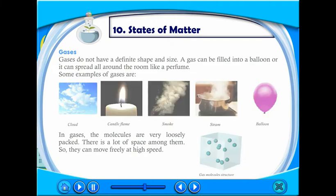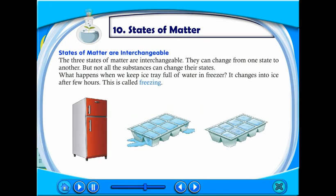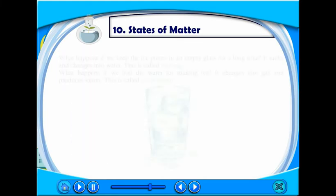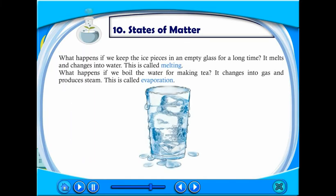States of matter are interchangeable. The three states of matter are interchangeable. They can change from one state to another, but not all substances can change their state. What happens when we keep an ice tray full of water in the freezer? It changes into ice after a few hours. This is called freezing.